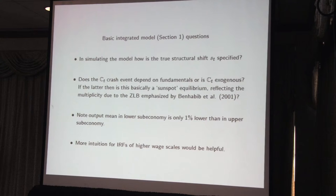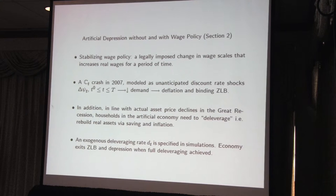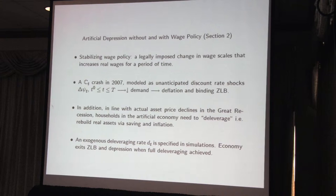Section 2 is where Mordecai generates this artificial depression and then considers what happens with or without policy. It's simulated by having a crash in 2007 modeled specifically as unanticipated discount rate shocks. Those decrease aggregate demand, lead to deflation, and that leads to the zero lower bound binding. Mordecai also builds in deleveraging, which comes from outside the model but is very plausible.